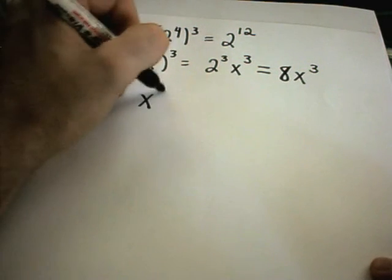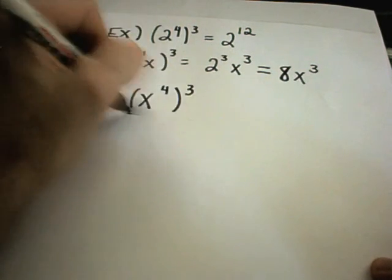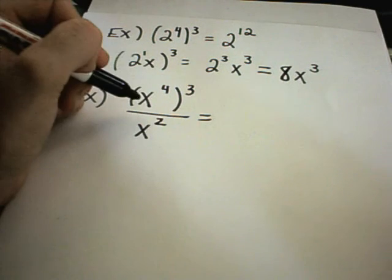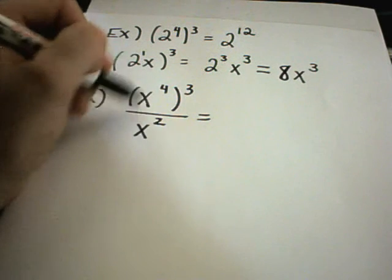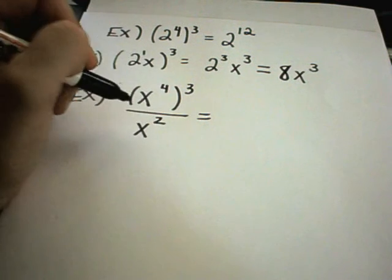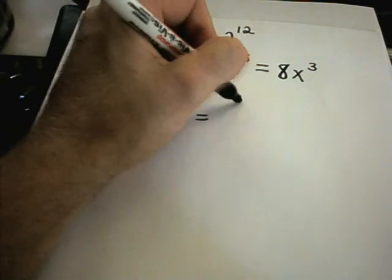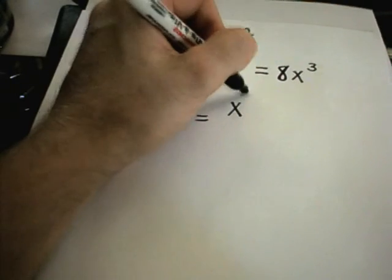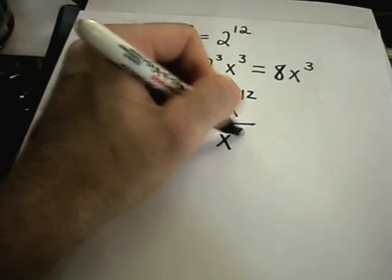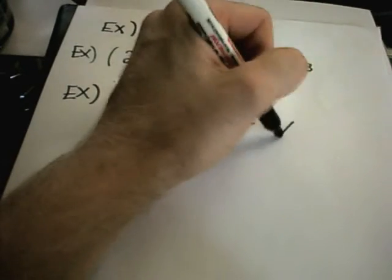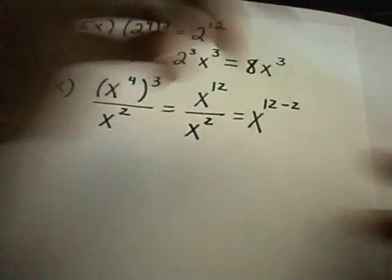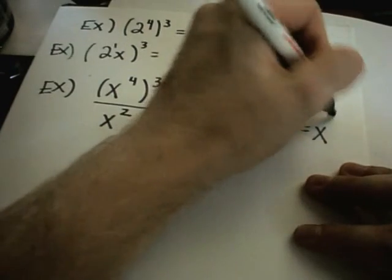Suppose I have x to the fourth raised to the third power, over x squared. You have to be careful — the denominator is not being raised to the third power, only the x to the fourth. Using the multiplication property, 4 times 3 gives x to the 12th over x squared. Now subtracting exponents — top minus bottom — gives 12 minus 2, leaving x to the tenth power.